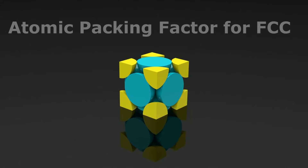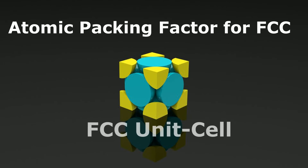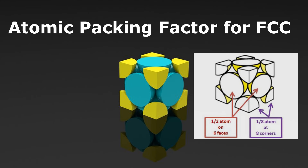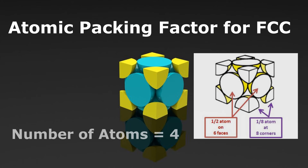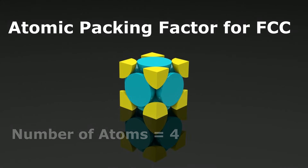This is the unit cell for a face-centered cubic crystal. There are four atoms in this unit cell — a half atom on each face and one atom contributed from all the corners. On every face of this structure there is a half atom; the other half is shared with the other unit cells. Combined with the corner contribution, there are a total of four atoms in this unit cell.